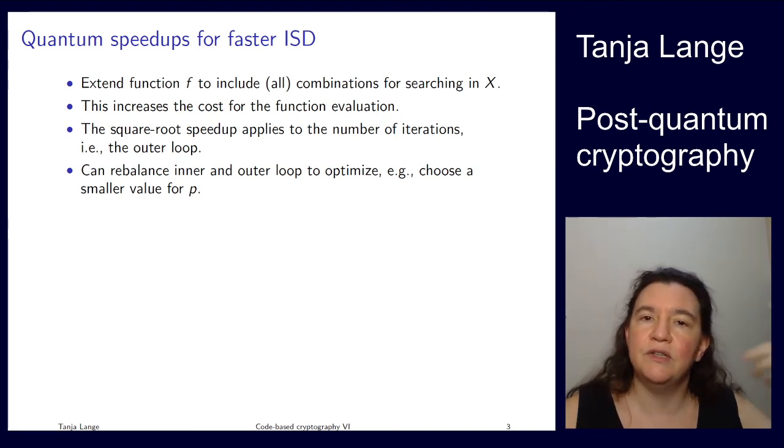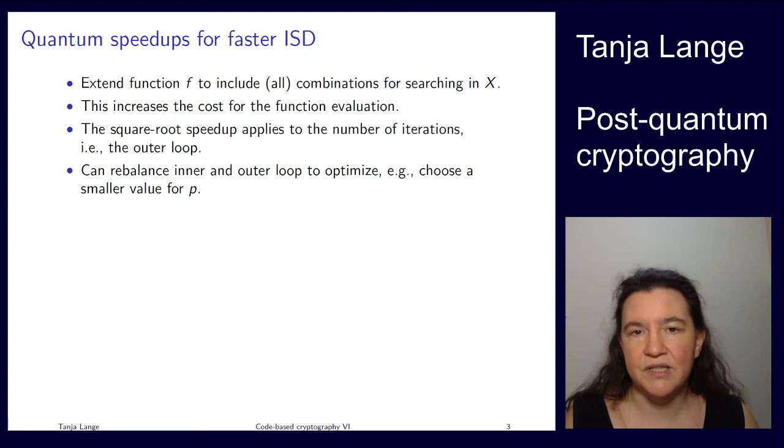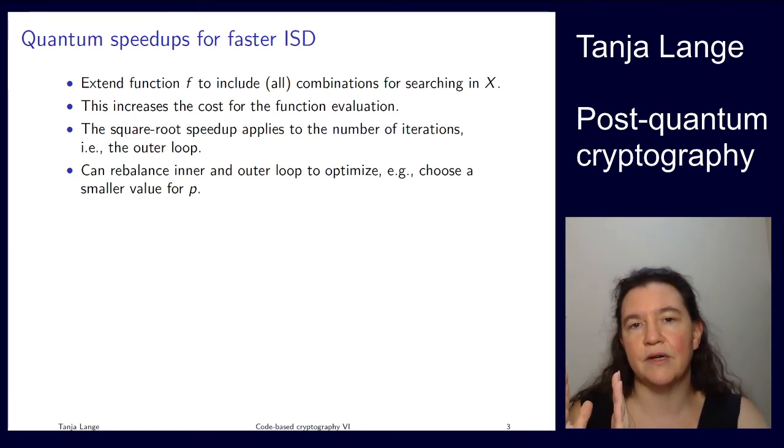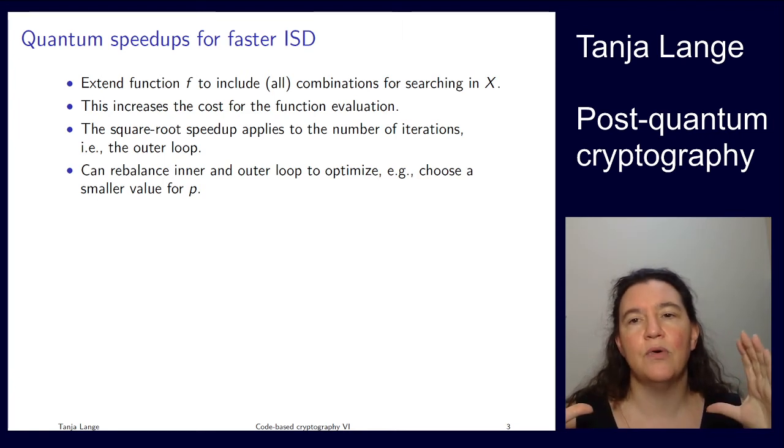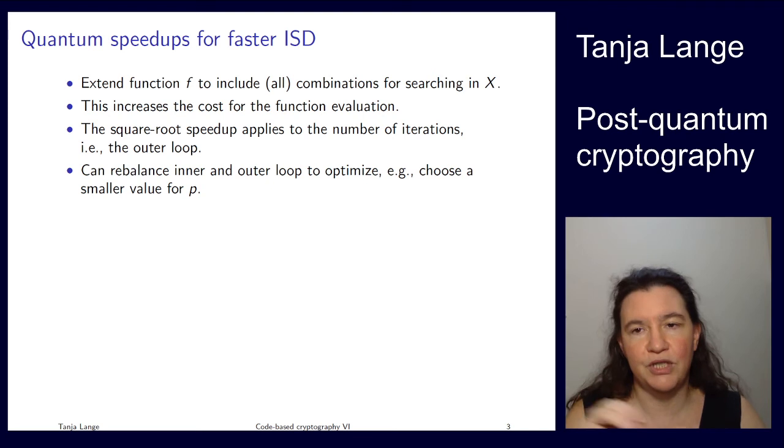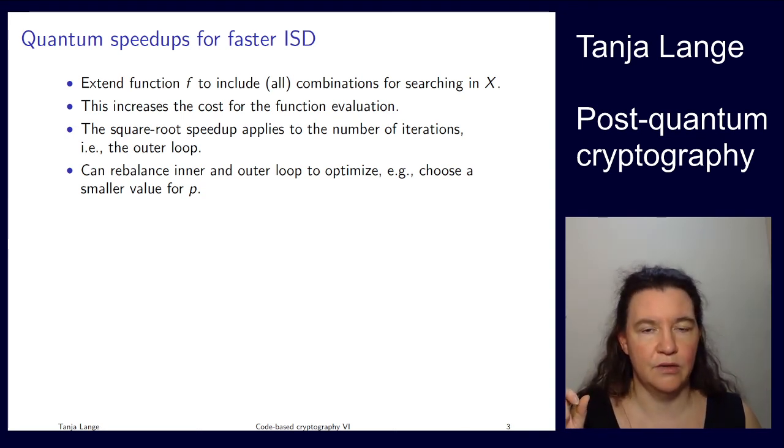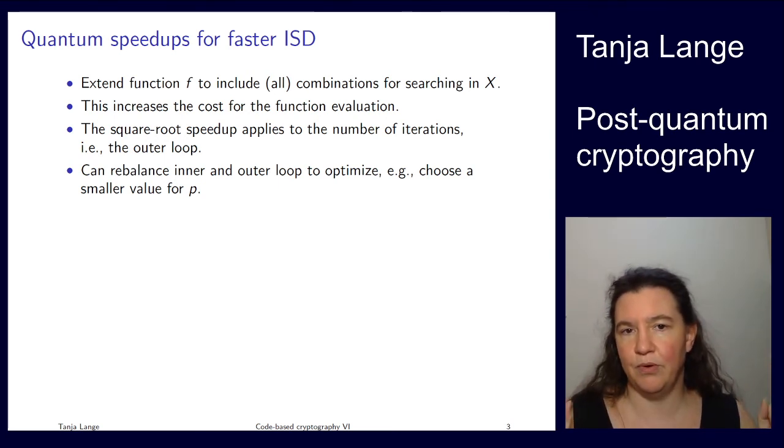And the interesting thing in, say, Lee-Brickell was that we are decreasing the number of iterations by having more success choices. So we are having more possibilities where we have the errors in the right positions. We are requiring t minus p over here and p over there. And that improves our chances. But now, while the outer loop is getting faster with this Grover, whereas the inner loop, which determines how expensive it is to evaluate our function, that is getting much larger. And so while we want to rebalance those sizes, for instance in this case, we want to choose a smaller value for p, because we don't get the speedup there, we are only getting a speedup on the outside.